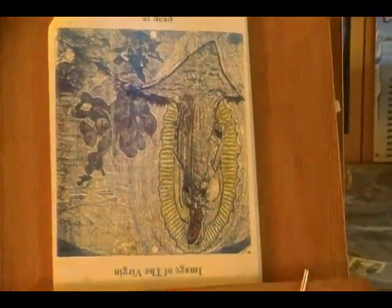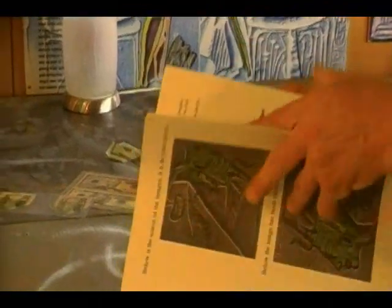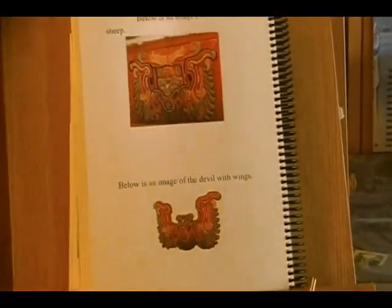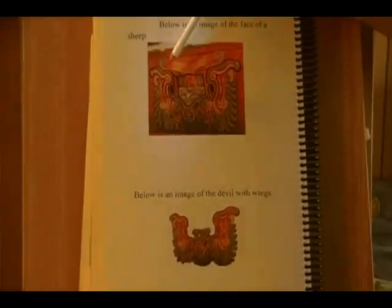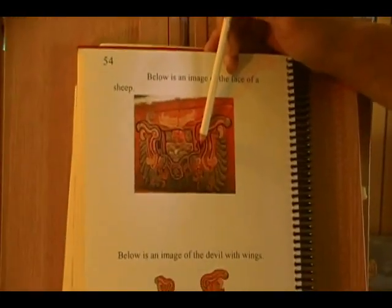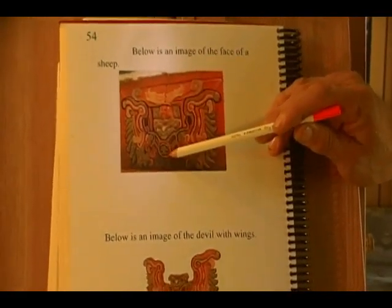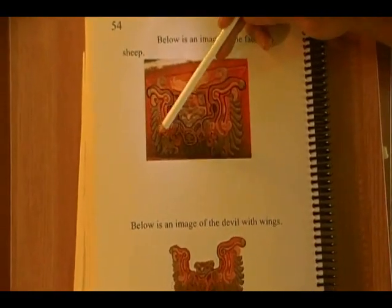I'm going to grab one more image of a sheep to show you and then we'll start putting the puzzle together. Here's another image of a sheep — here's the sheep's eye, the other eye, coming down his face to his nostril, and there's his mouth. These are his ears going out this way, and this represents the sheep's fur.